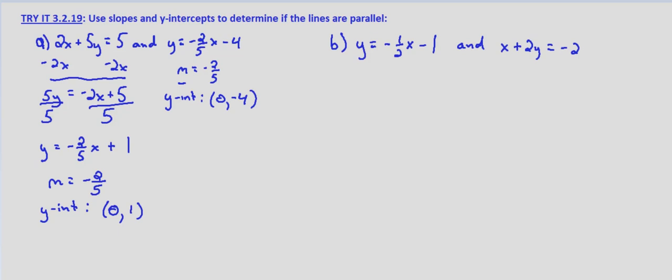We have slopes that are equal and y-intercepts that are different. That means these two equations represent lines that are parallel. Yes, the lines given are parallel.